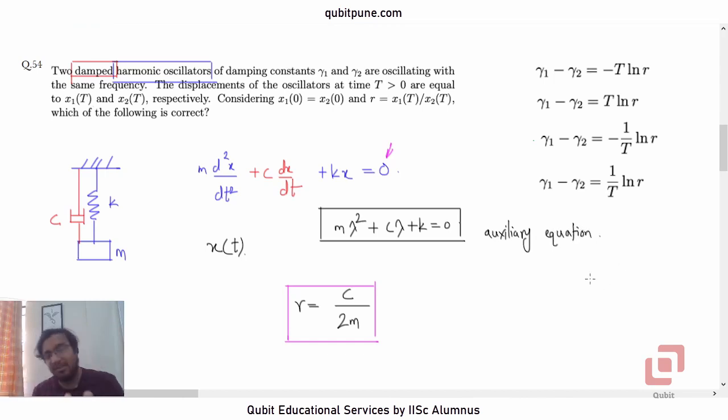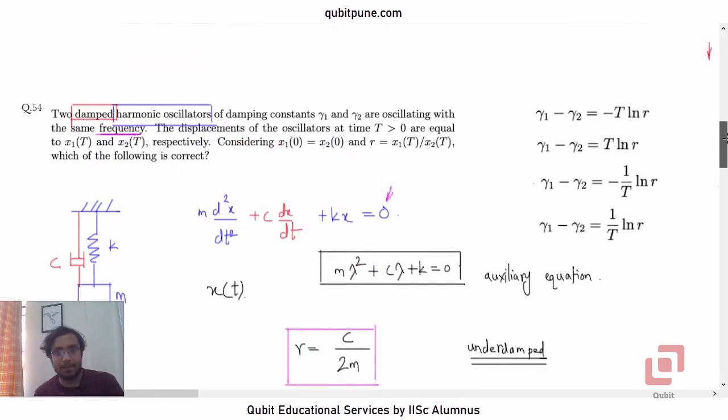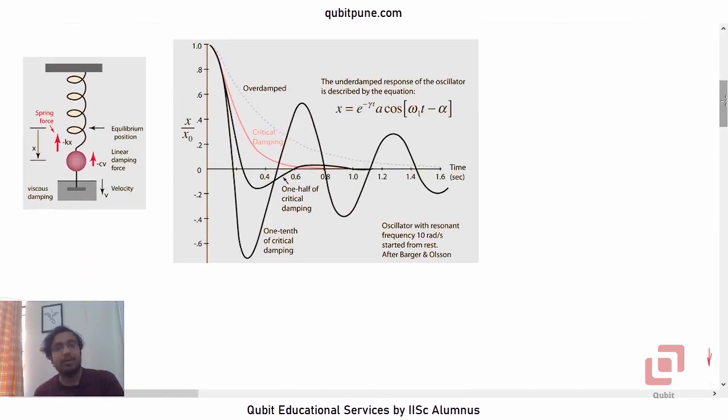The situation is such that only if the roots of this auxiliary equation are complex conjugates, only then you expect the oscillator to oscillate with some frequency. And we call such a system as underdamped system. Now, let me show you the graphs of underdamped, critically damped, and overdamped systems.